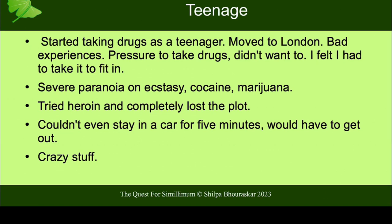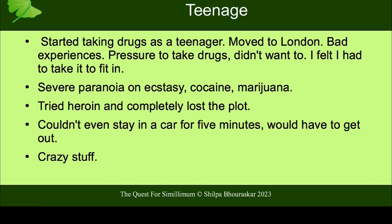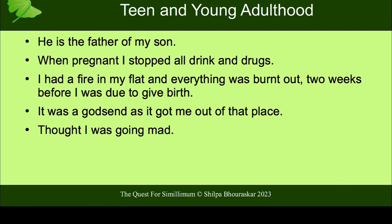She had severe paranoia on ecstasy, cocaine, marijuana. She also tried heroin and completely lost the plot — she couldn't stay in a car for a few minutes. Between ages 19 and 25 her first partner, who she had at 15, was abusive and manipulative. He dumped her in the middle of the night before her driving test and she failed. She says: I was a yes person, he was a strong character, I was not. He was a drug addict. She froze whenever she was with him — he would come in, take things from the house and sell them for drugs. She was completely numb and paralyzed, couldn't speak, but couldn't leave him. He became the father of her son — she got pregnant.